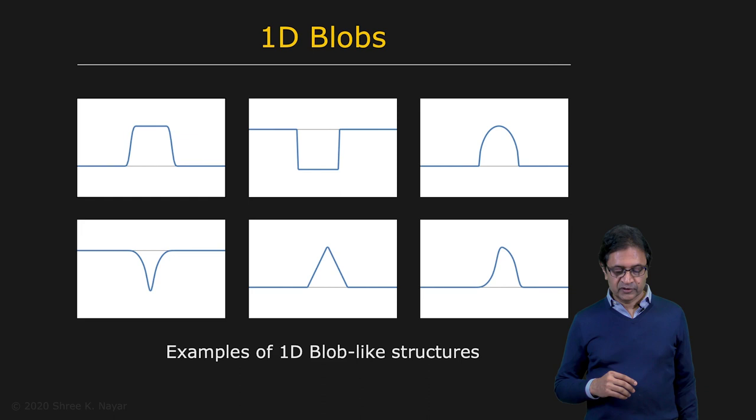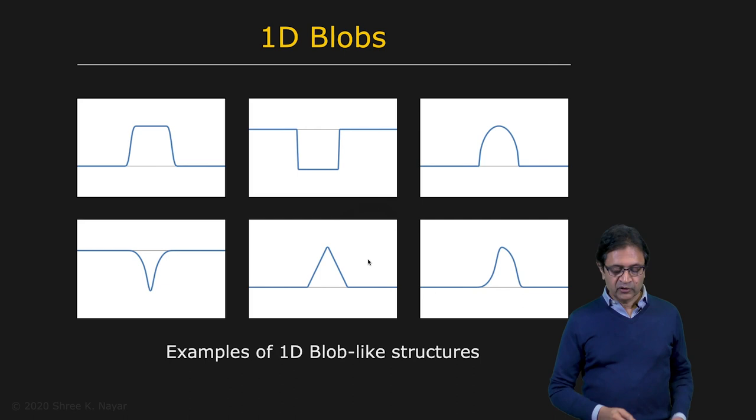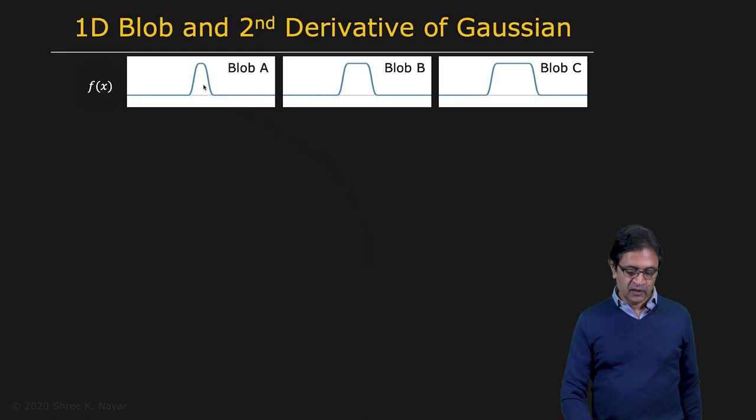So let's look at blobs. Here are 1D blobs of different shapes, and we want to find all of these as blobs in the image. We're going to look at a case where you have 3 blobs. Here is the image, f of x, 1D, and we have 3 blobs. The difference between these blobs is that blob B is 2 times the width of blob A, and blob C is 3 times the width of blob A.